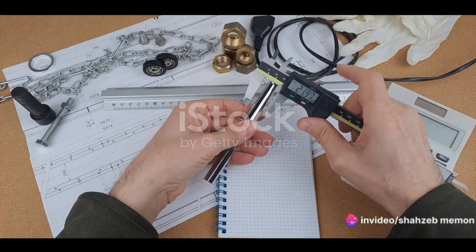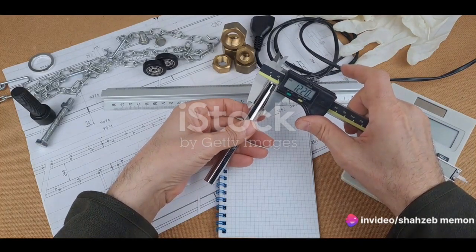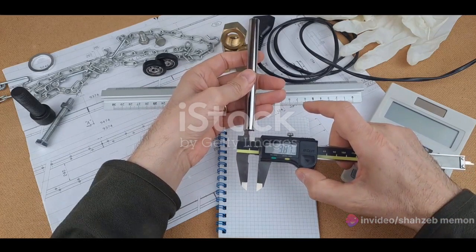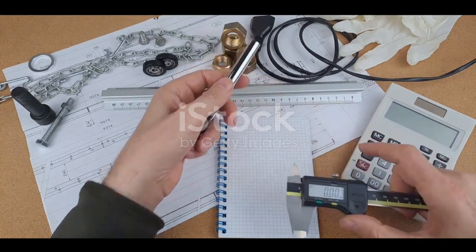Similarly, in metalworking and machining, these tools are used to measure the diameter of cylindrical objects, thickness of materials, and other critical dimensions in the fabrication process.